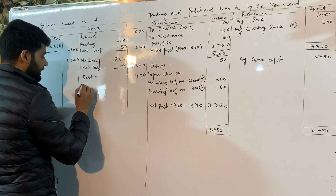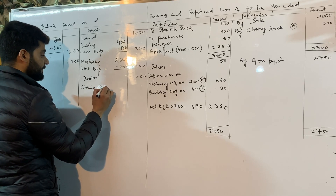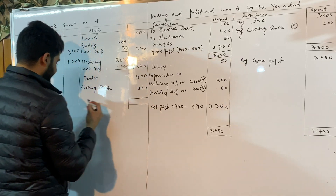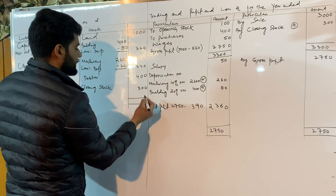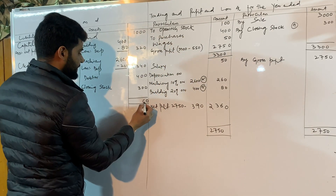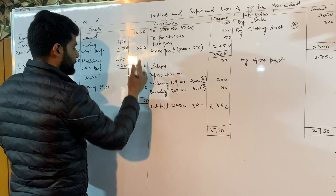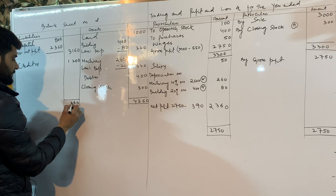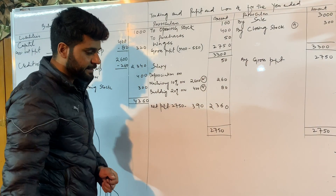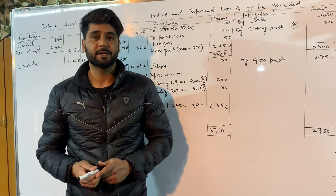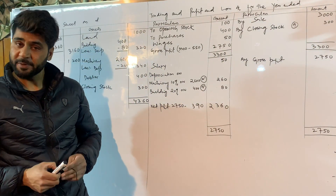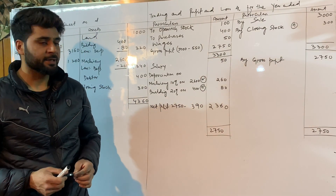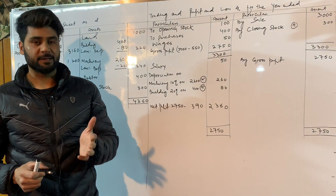So depreciation: why does it have two effects? If you see the closing stock, it also has two effects — one in the trading account and one in the balance sheet. When you total everything up, the liabilities equal the assets at 4,360. I hope this is clear. If you have any questions, you can drop a comment or send me a text. Thank you very much.